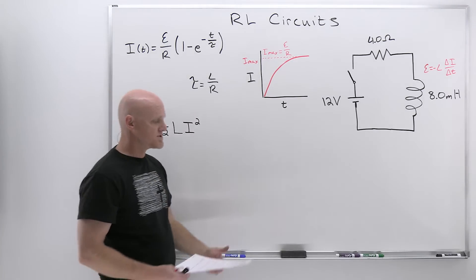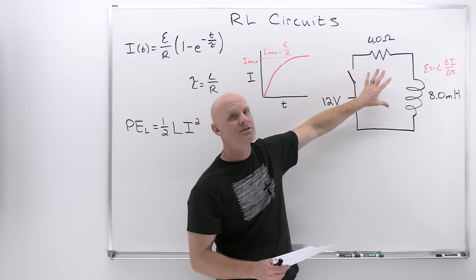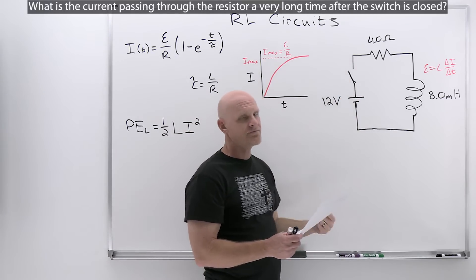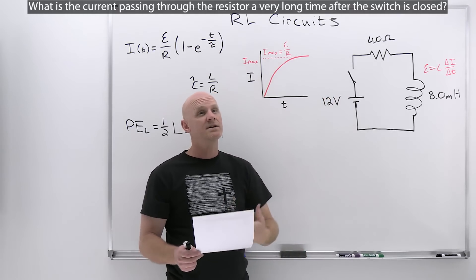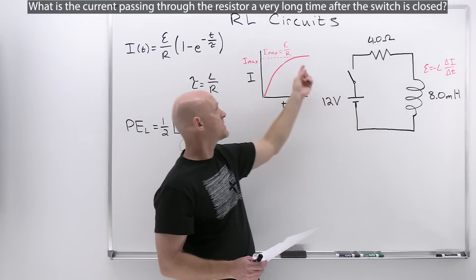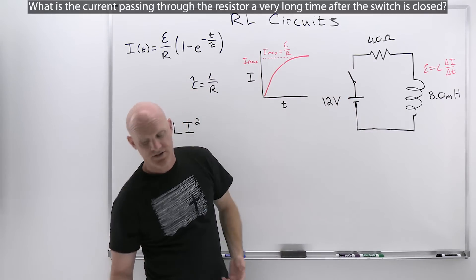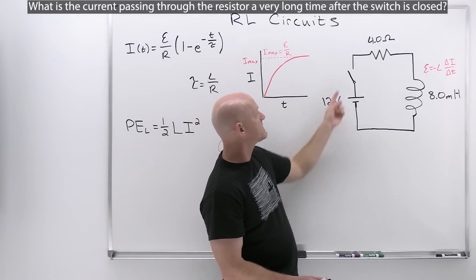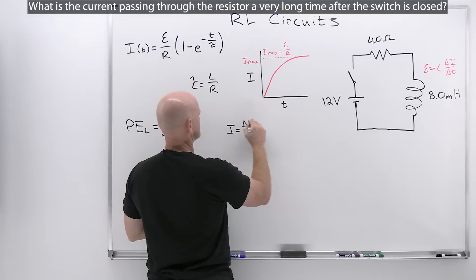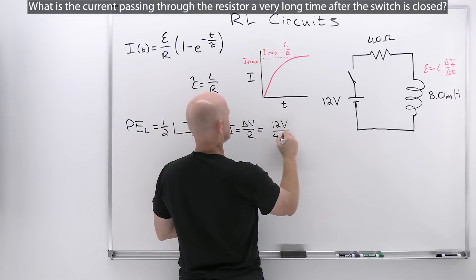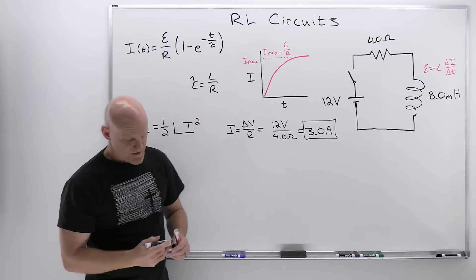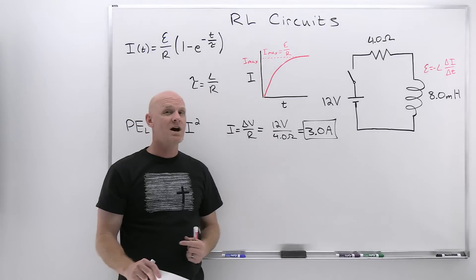Now let's work through five parts of a question, all based on the same circuit diagram. Part 1: what is the current through the resistor a very long time after the switch is closed? After a very long time we've reached maximum current, so we just use Ohm's law as if the inductor isn't there: I = ΔV/R = 12 volts / 4.0 ohms = 3.0 amps. After a very long time, the inductor has no effect on how much current flows.